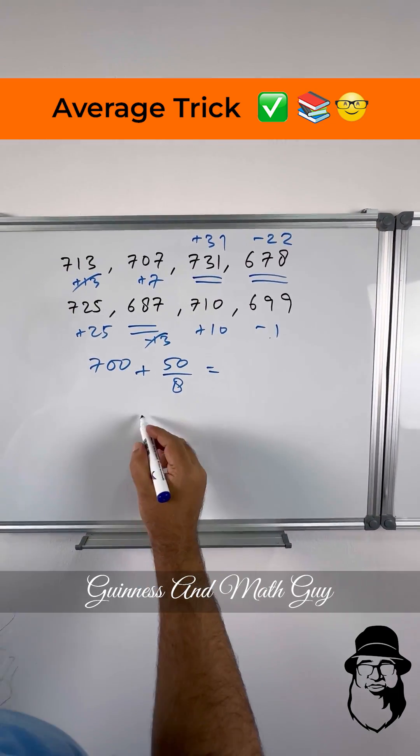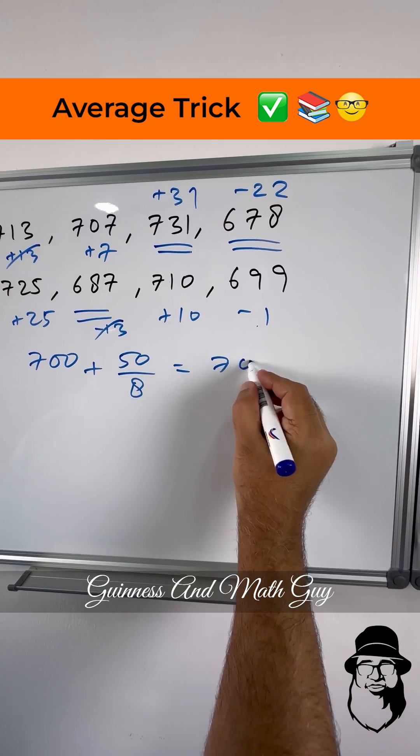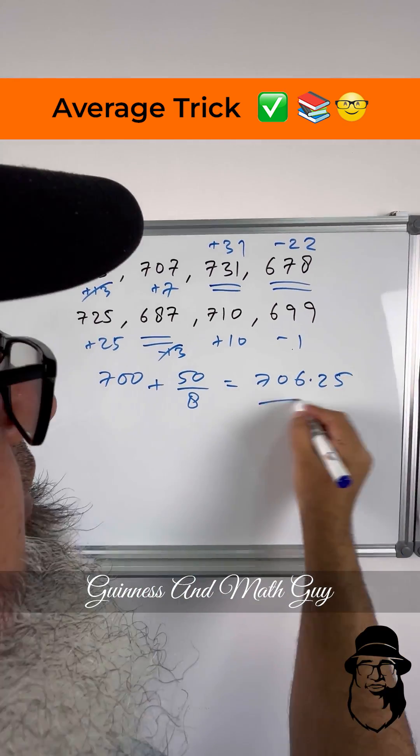Our answer will be 706. 8 times 6 is 48, and then we have 2 over 8, or 1 over 4, that is 0.25. That's our answer.